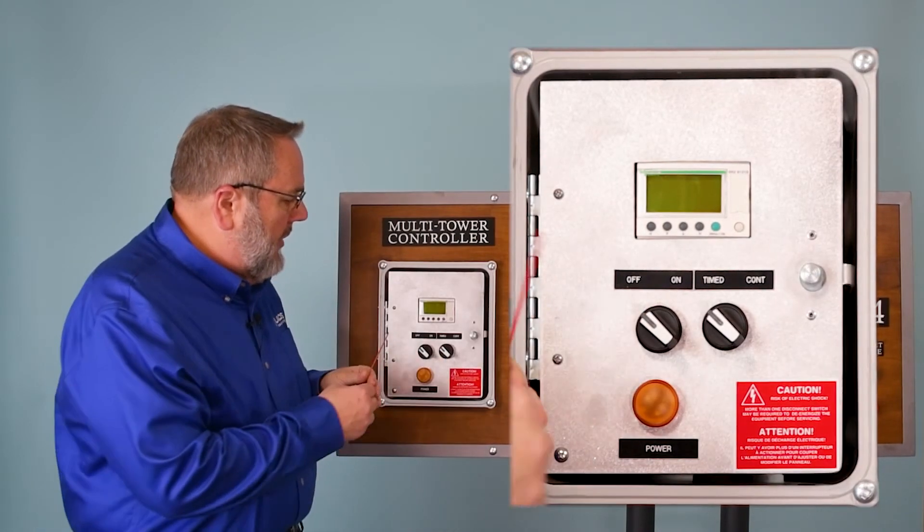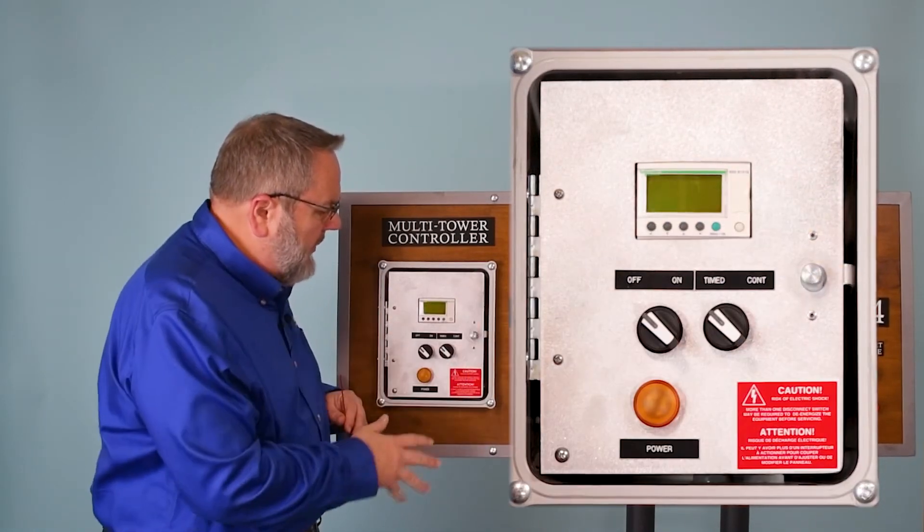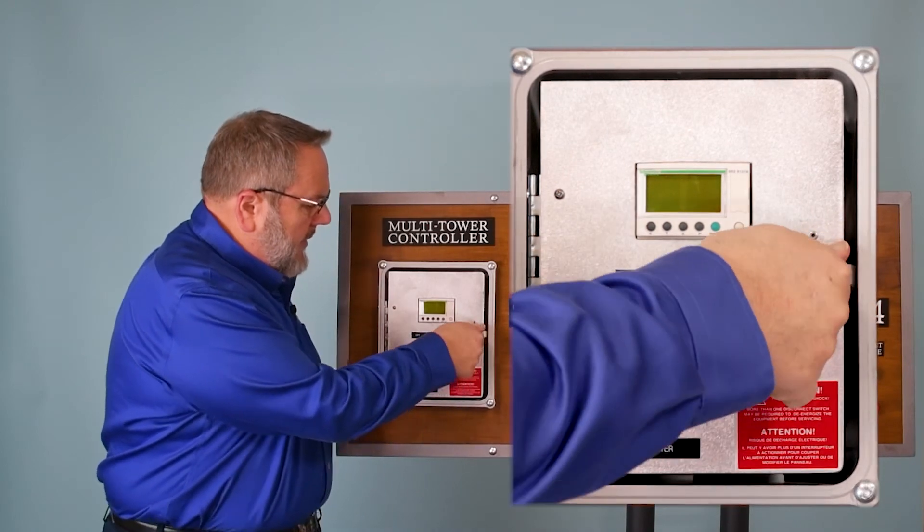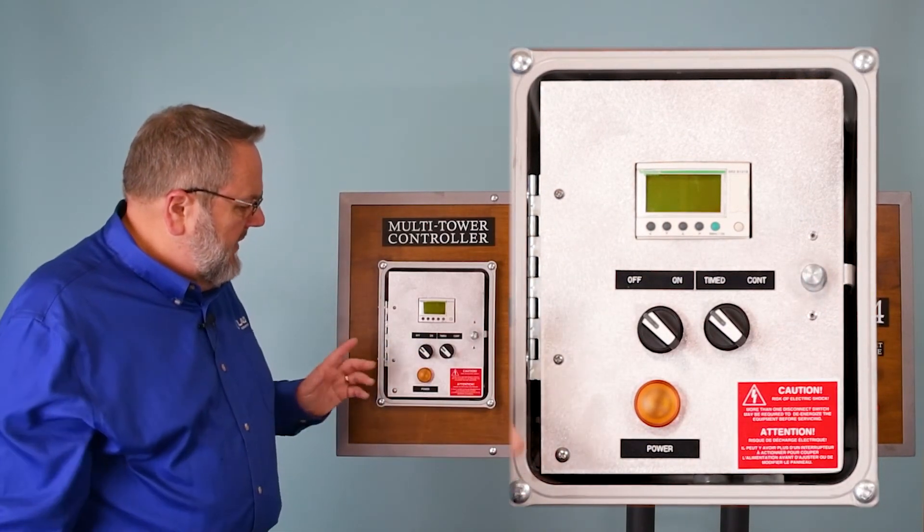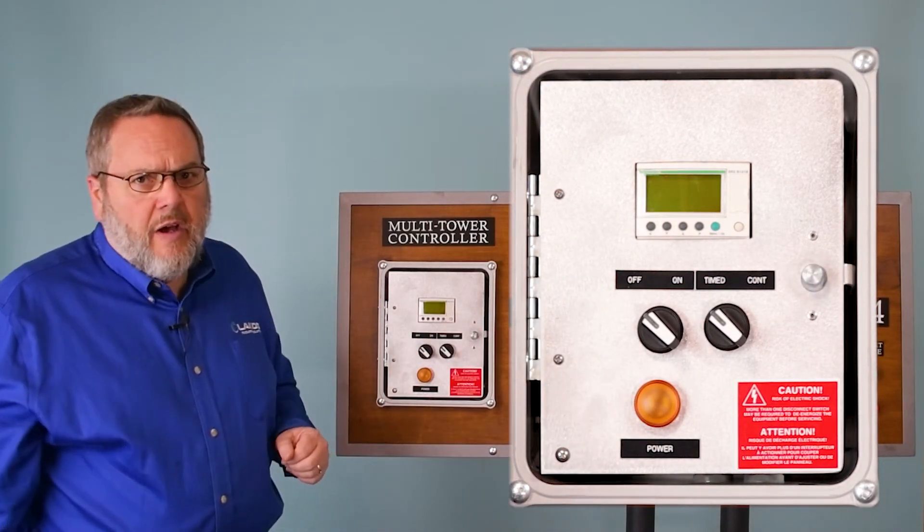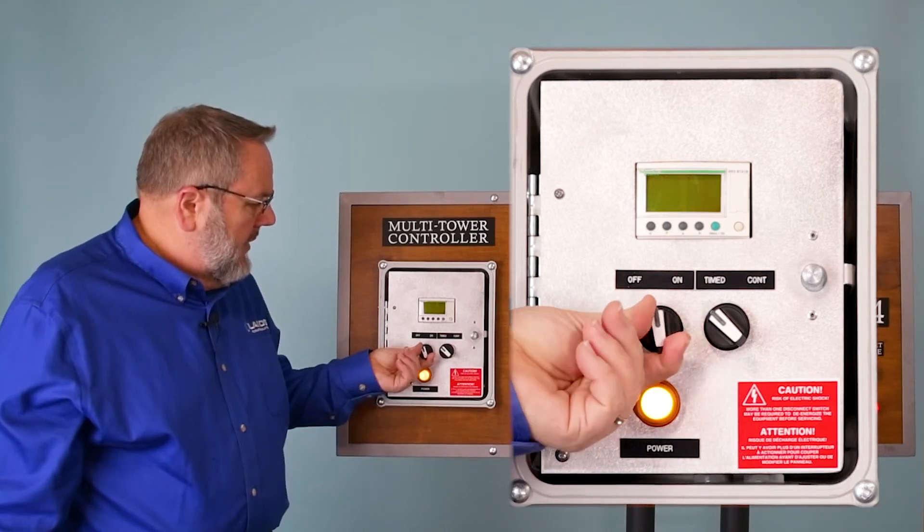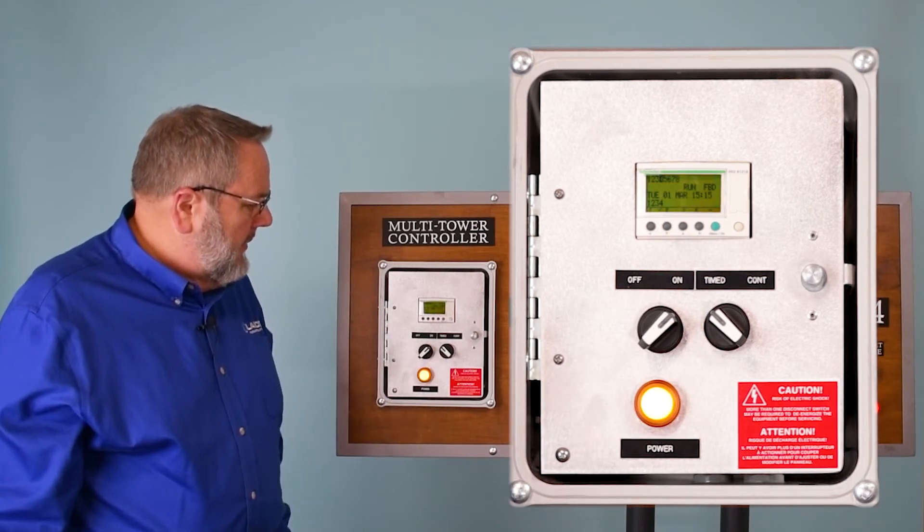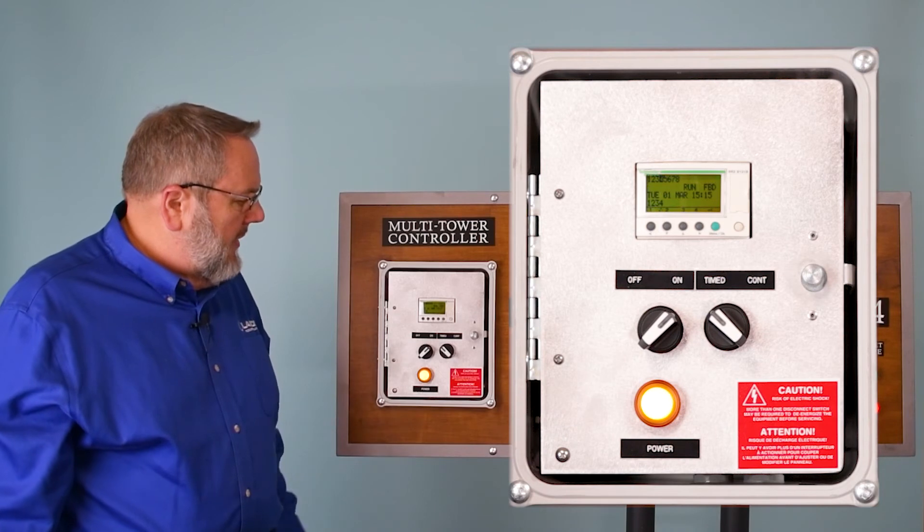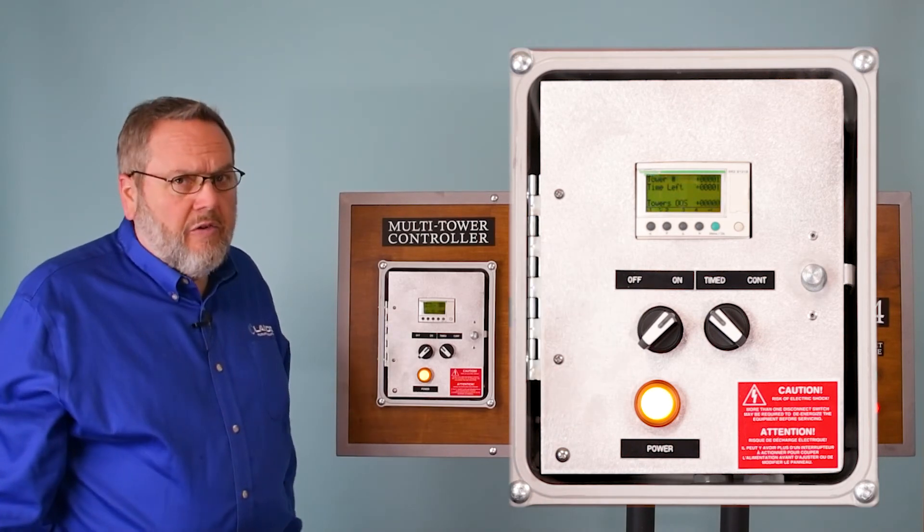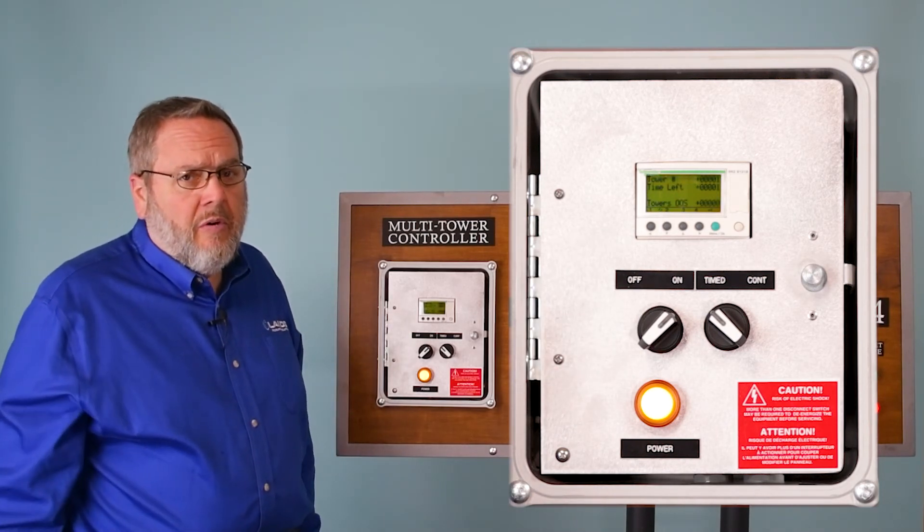So again you would just close that once everything's wired. Close it up, basically take your lockouts off your main disconnects, and then power the unit up. And again, the program is in there and everything is good, you'll see it in the display. The display will come up, it'll ask you to program it.